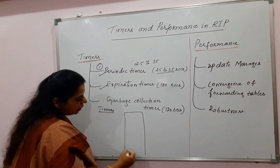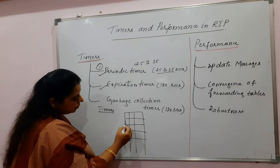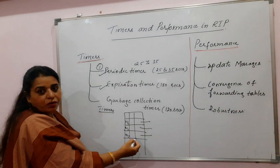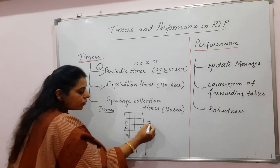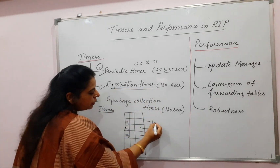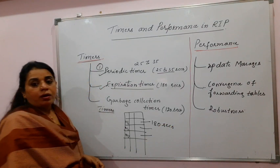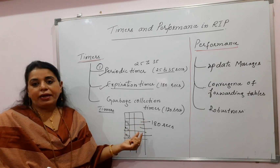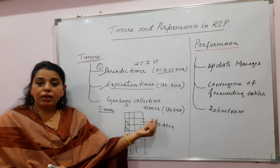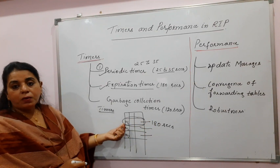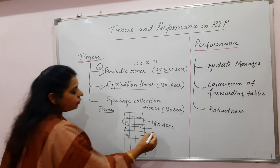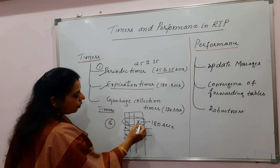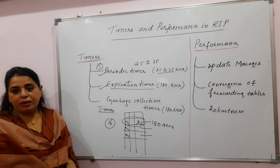The next one is the expiration timer. Each router maintains different route information — N1, N2, N3 — these are the different route entries present in the forwarding table. For each of these routes, an expiration timer is set, and the value is 180 seconds. Every router should receive a route information update within 180 seconds. If it does not receive any update for a particular route, that route's cost is set to 16.